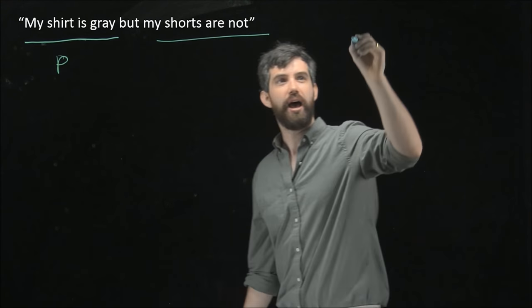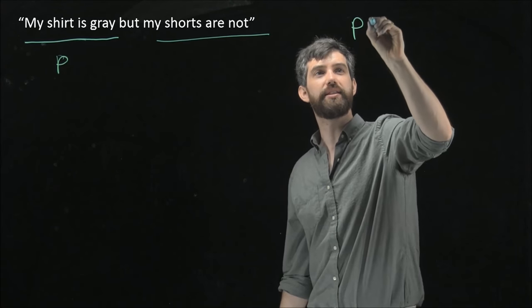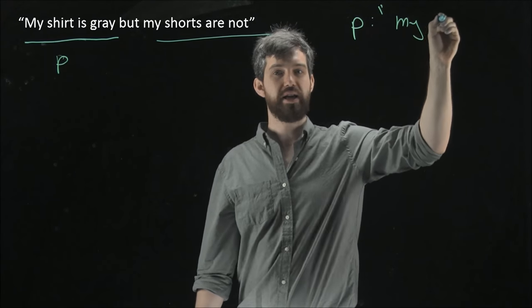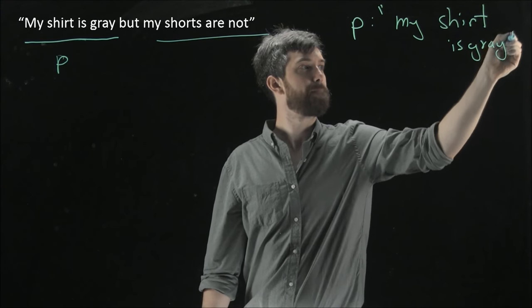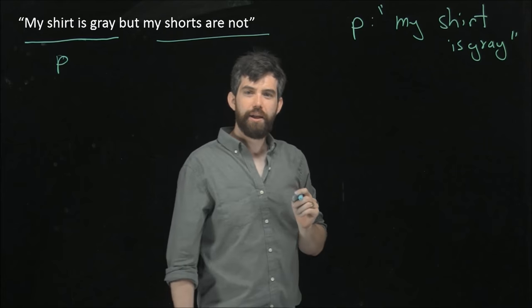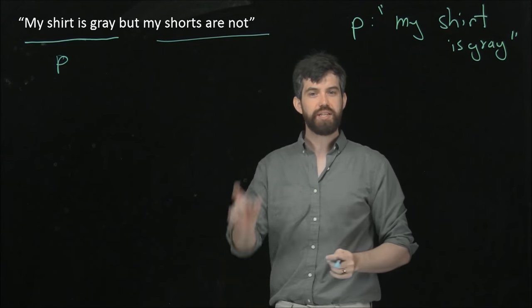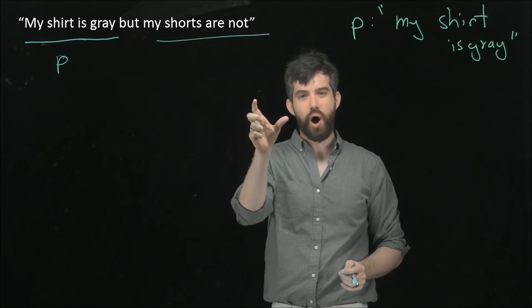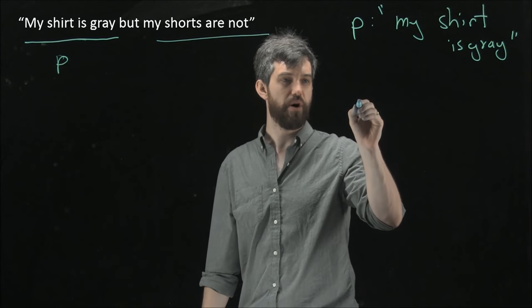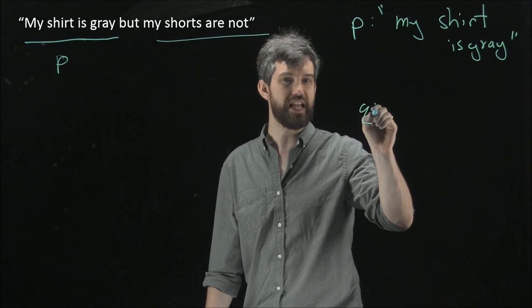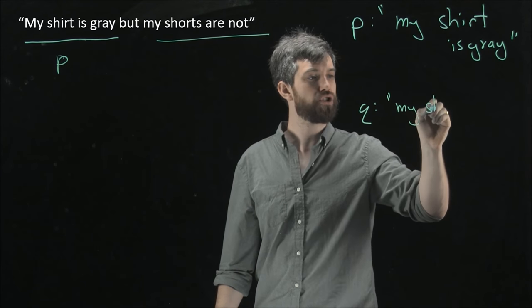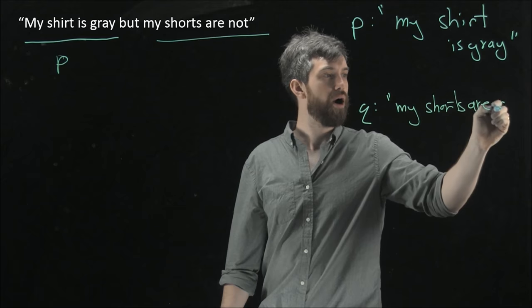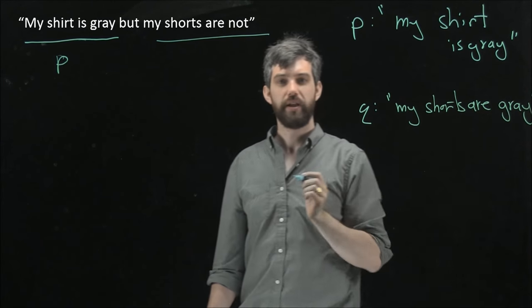I'm going to call this p. And I'm going to say that p is the statement, my shirt is grey. Now, for the second of these, my shorts are not grey. Well, there's a negative in there, there's the word not. So, what I'm actually going to do, and we're going to see how this works in just a moment, is I'm going to make q be this statement but without the not in there. So, I'm going to say this is, my shorts are grey.